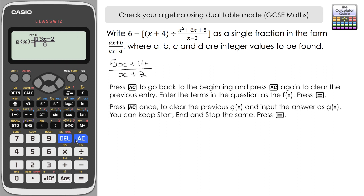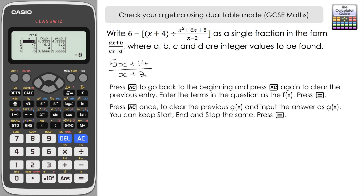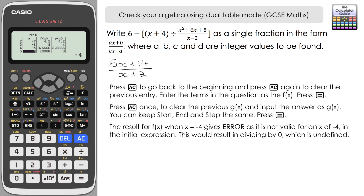Close the large bracket and press equals. Then input our answer (5x+14)/(x+2) as GX — much simpler. We keep the same range as question one and press equals. The first results show FX and GX matching, but scrolling down we see a difference: when x = -4, FX gives an error but GX gives a result. Let's look at why.